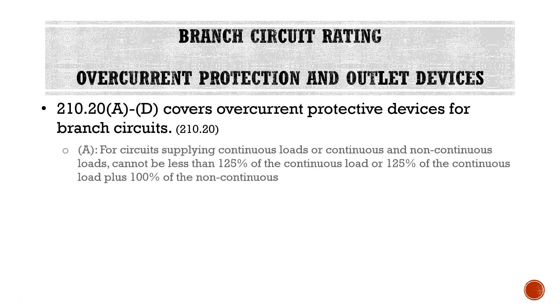Moving into Part 2 of this article, we look at overcurrent protection and outlet devices. Section 210.20A through D covers overcurrent protective devices for branch circuits. Part A is a very important and commonly used NEC rule. For circuits supplying continuous loads, or continuous and non-continuous loads, the overcurrent device cannot be less than 125% of the continuous load, or 125% of the continuous load plus 100% of the non-continuous load. A continuous load is any load that runs more than three hours at a time.